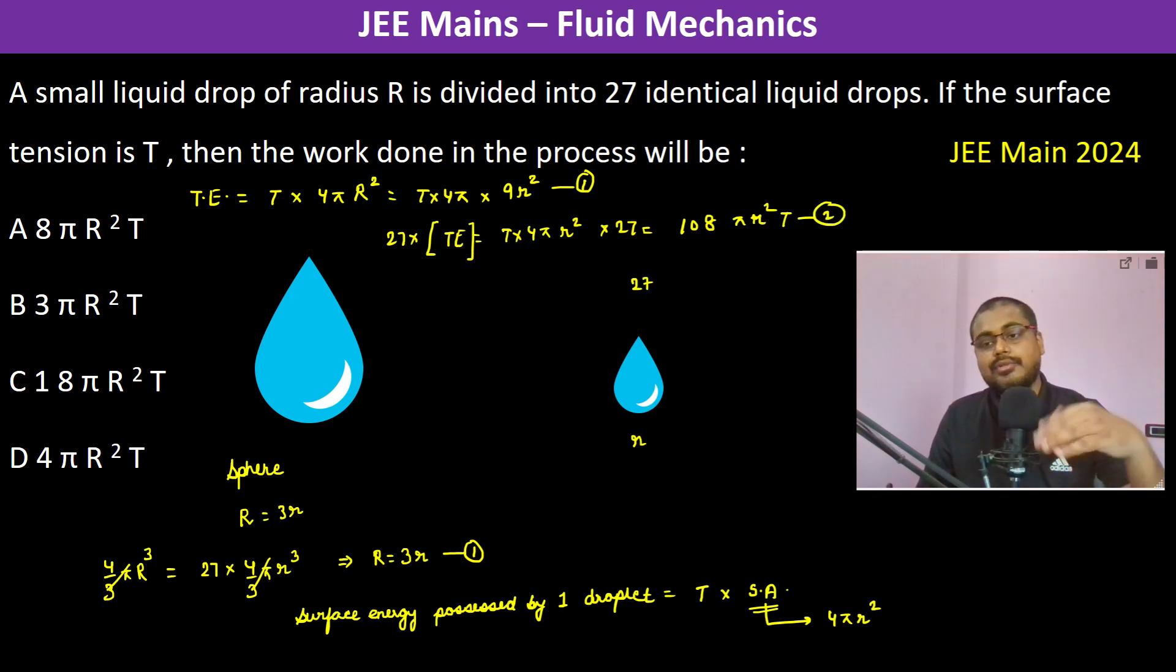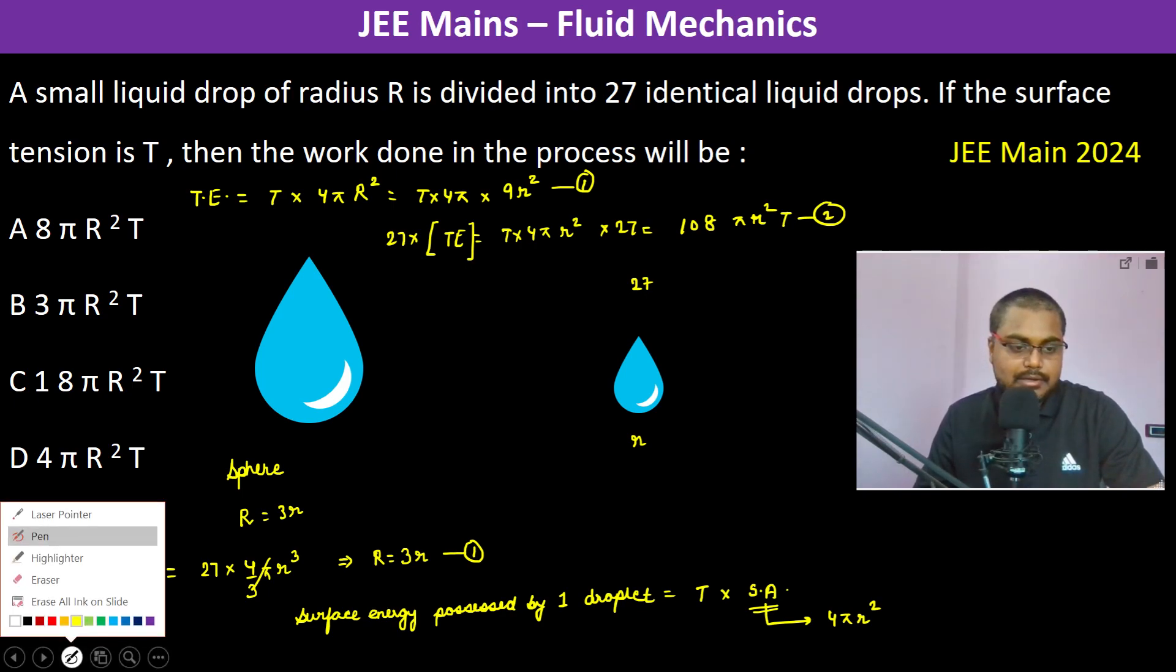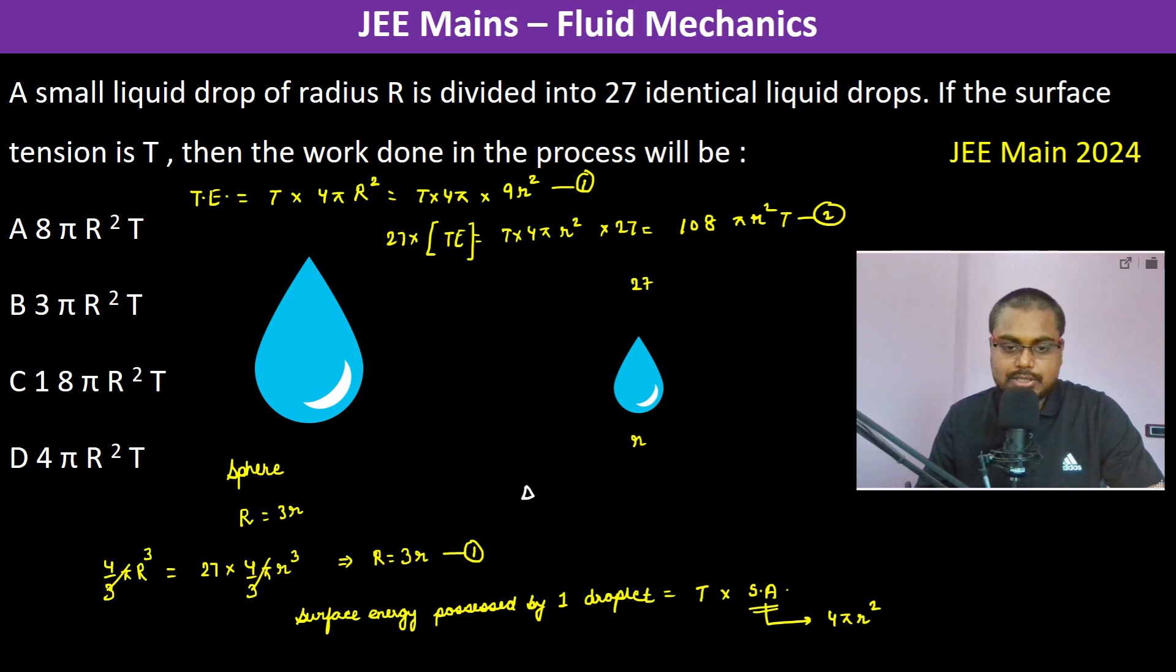Now we have to see how much energy has increased, so that much energy will have to be given. Therefore we can write the increase in energy is equal to 108 minus 36 into T into pi r square.